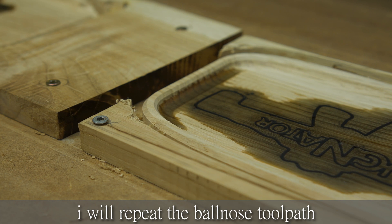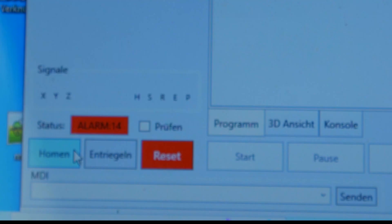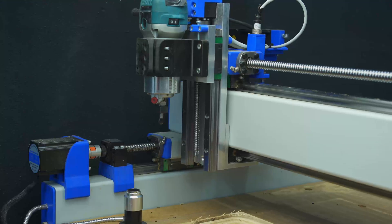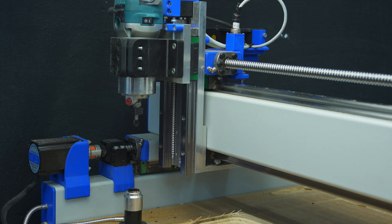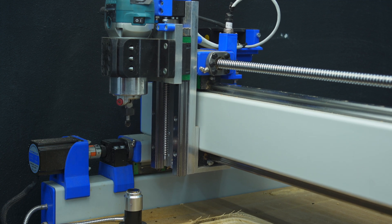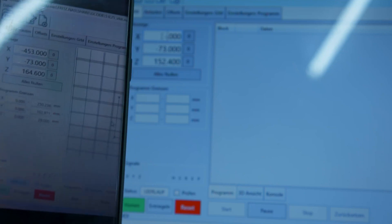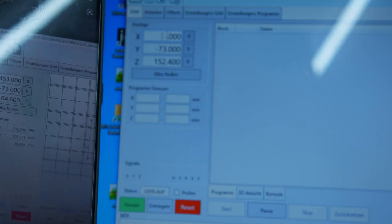The epoxy did flow into the roundover, so to avoid hand sanding I will rerun the roundover toolpath. Since I saved the coordinates at the home position yesterday I can simply home the machine, put in the saved coordinates and continue where I left, assuming the limit switches are somewhat accurate.